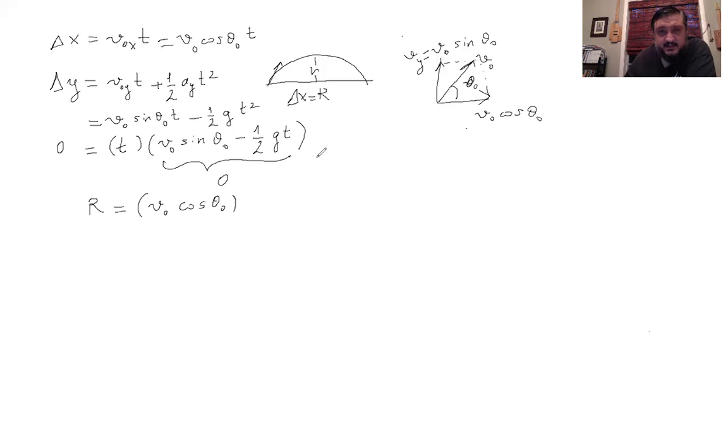But what is T? T is the solution of this equation. Zero equals V naught sine theta naught minus one half G T. If you solve it for T, you will get two times V naught times sine theta naught divided by G. That is your T. So plug that in here: two V naught sine theta naught over G. Here's your answer, actually. We have the initial conditions, V naught and theta naught, and G is just a constant. So here's your R.